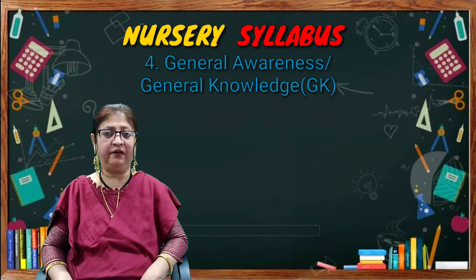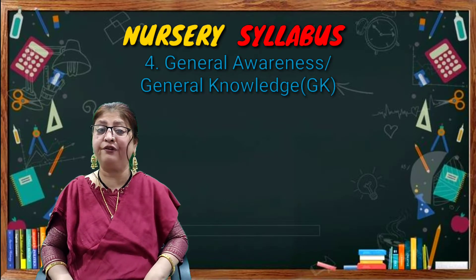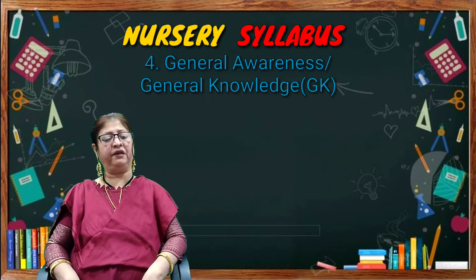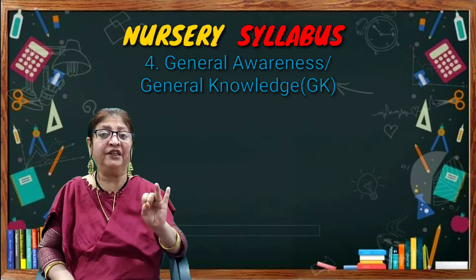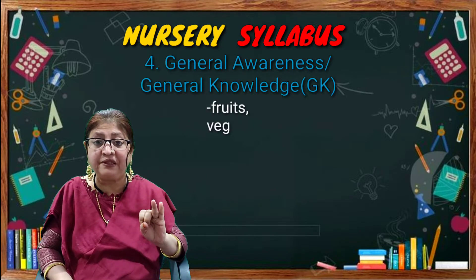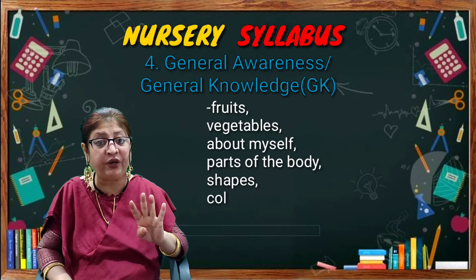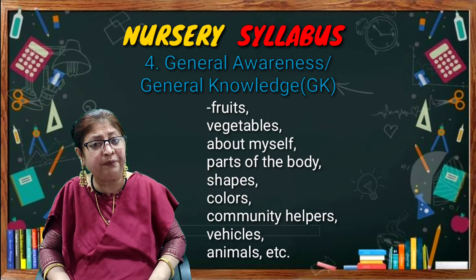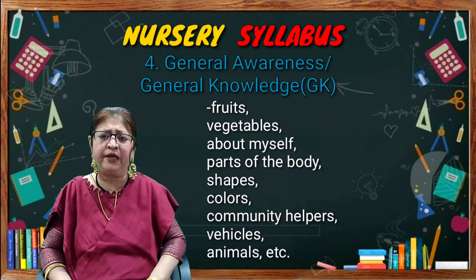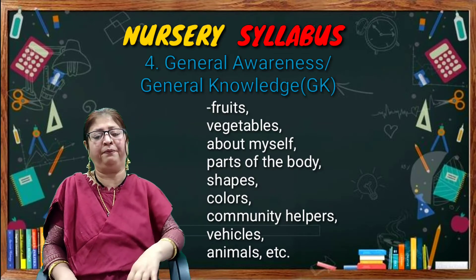The last topic is general awareness, which you can also call GK — general knowledge. In this topic, many points are covered, like fruits, vegetables, about myself, parts of the body, shapes, colors, community helpers, animals, and many more. It is a very vast topic, babies.